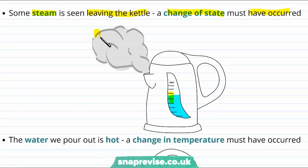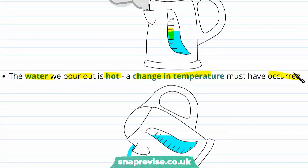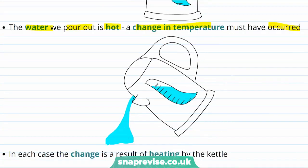So here is our water in the kettle and here is some of the steam that's been released, and we know that some of the heat from the kettle has gone into changing the state of the water. On the other hand, we know that the purpose of the kettle all along was to heat up the water. So the water we pour out is hot. So a change in temperature has also occurred. So in each case we see that we have a change in temperature and a change of state, and both of these changes are a result of heating by the kettle.